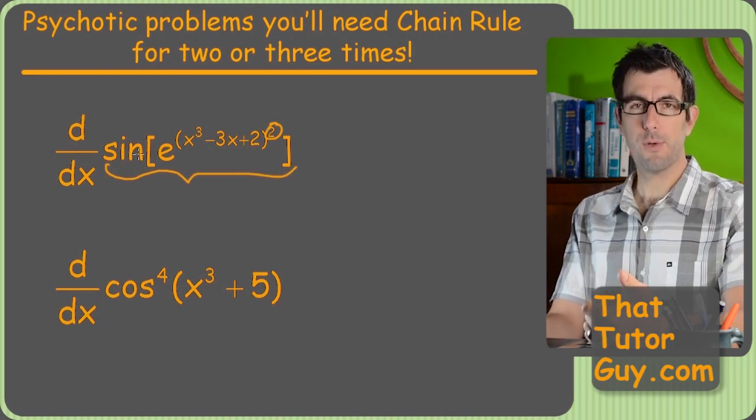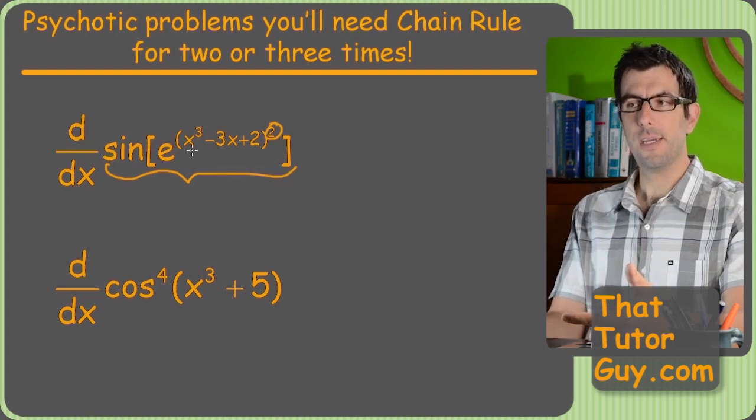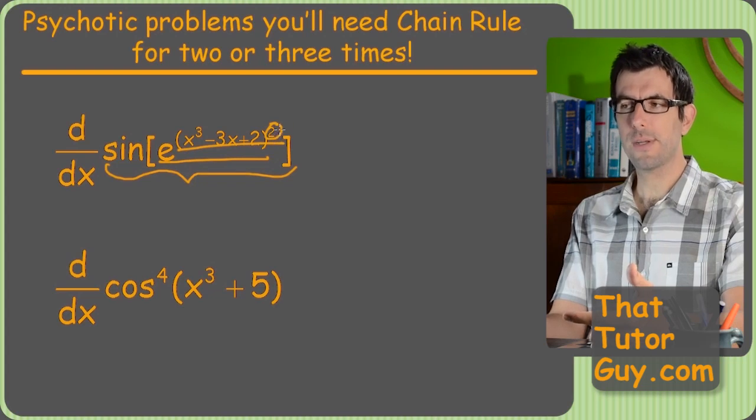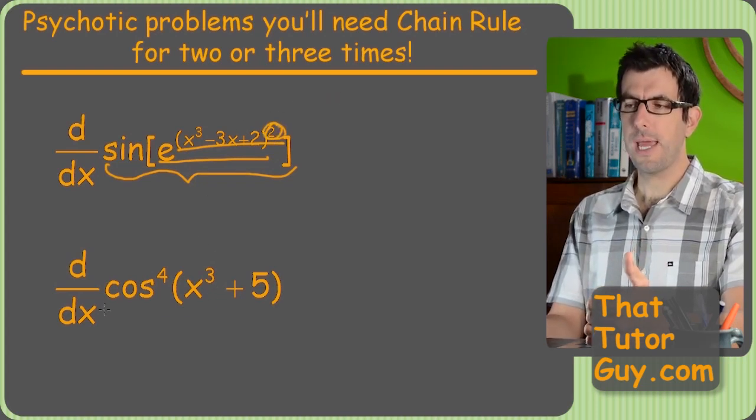You're going to start out with the derivative of the sine being cosine, but then when you do your u prime on that first chain rule, you'll have an exponential with its own chain rule, but then that exponent is going to need the chain rule because it's a power. Super crazy problem. Similar thing is going to happen down here.